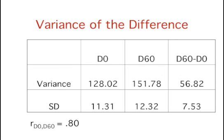For the current example, r equals 0.80, and the variance of the differences is much smaller than the variance of D0 or D60. The smaller variance of the difference scores leads to a smaller standard error of the mean, which leads to a larger t.